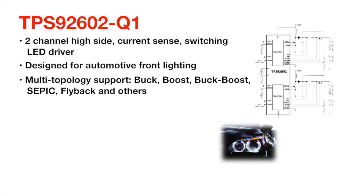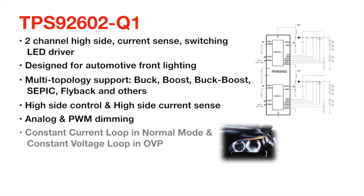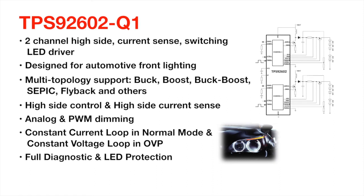Similar to our rear lighting device, the TPS92602-Q1 also has high-side control and high-side current sense for demanding designs in automotive. This device's flexible design allows it to support both analog and PWM dimming. Having both constant-current and constant-voltage loops, it can protect the entire system in constant-voltage mode when an LED open happens, then recovers back to constant-current mode when the open is removed. The TPS92602-Q1 has full diagnostic capabilities with a dedicated DIAG pin to read back fault information through the ADC. Both channels have separate controls, diagnostics, and loop compensation, with switches 180 degrees out of phase, reducing EMI.